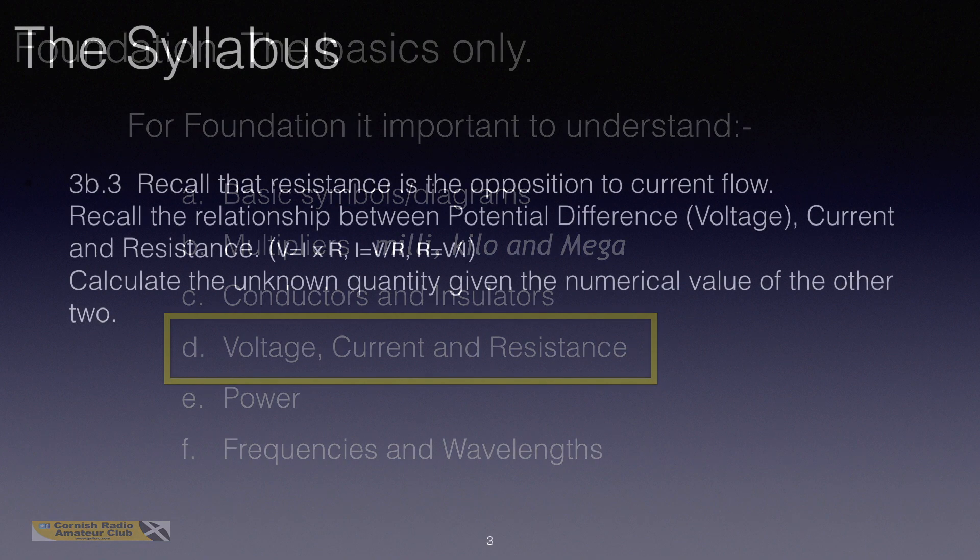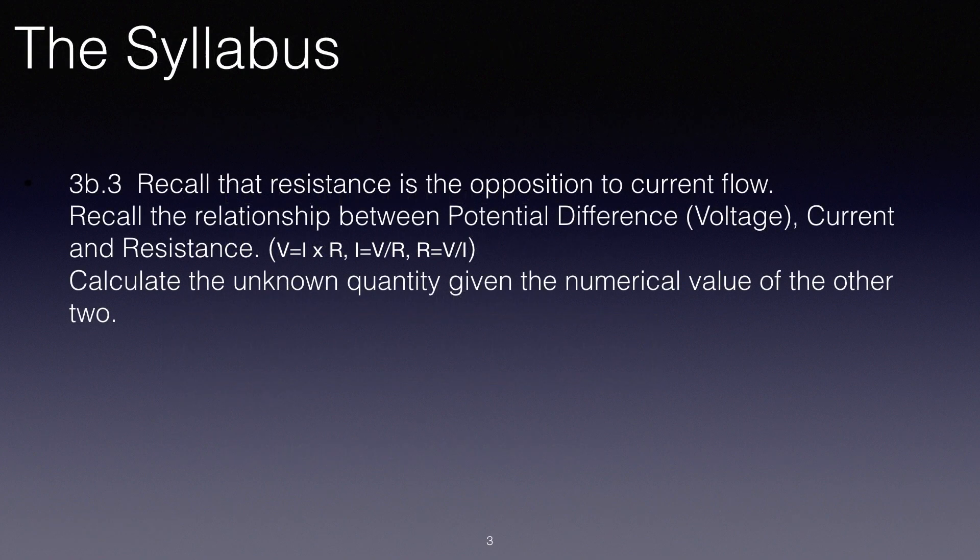Let's have a quick look at the syllabus. 3B3 says recall that resistance is the opposition to current flow. Recall the relationship between potential difference (voltage), current, and resistance.